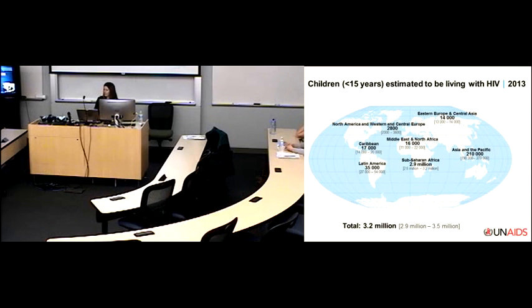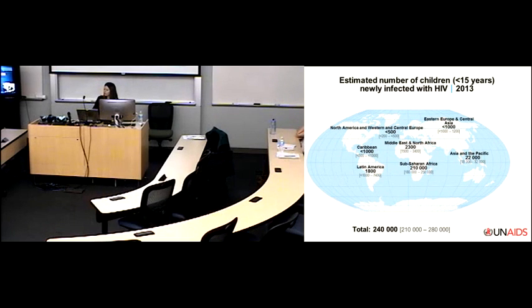So, this is where we are right now. This is the 2014 UN AIDS report, and it reports on numbers in 2013. Children under 15 years of age estimated to be living with HIV are around 3.2 million in the world. Sub-Saharan Africa has the bulk of those infections, 2.9 million children there living with HIV. And we estimate that 90% of those have come from vertical transmission, or mother-to-child transmission. The number of newly infected children in 2013 is 240,000 overall, and 210,000 of those were in Sub-Saharan Africa as well. So, you can see the numbers are still pretty staggering.